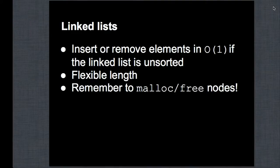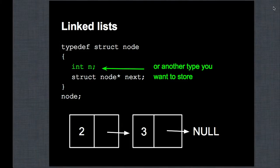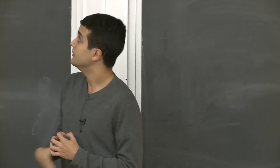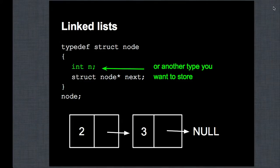You just have to be careful to always remember to malloc and free the nodes, because if you don't, you're going to have memory leaks. The definition of a node has int n — though you can store any data you want, a string, a struct, a double, whatever — and a pointer to the next node. A linked list has some data and then points to the next node; if it's the last element, it points to null.